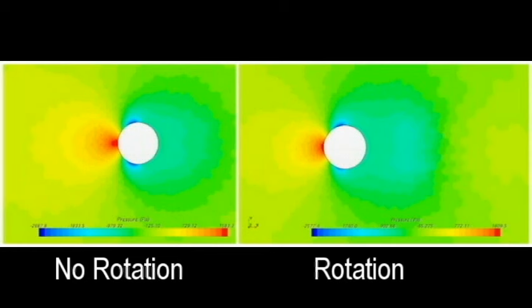We created CFD models to illustrate this effect. Here are scalar scenes of pressure around two projectiles moving right to left. The red regions show areas of high pressure while blue indicates areas of lower pressure. Notice that the highest pressure occurs at the front side of the ball as we would expect.